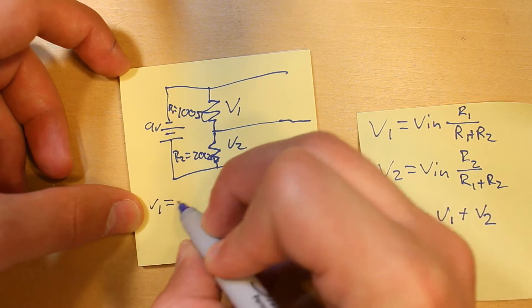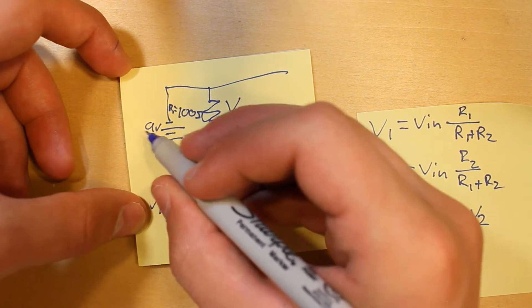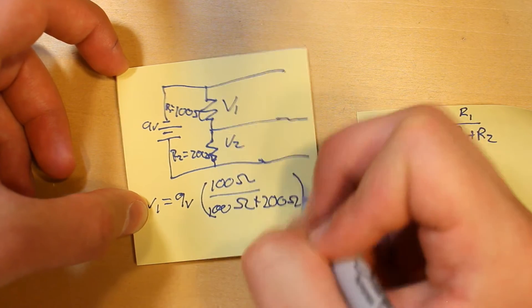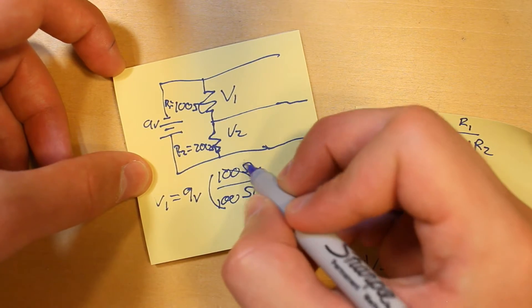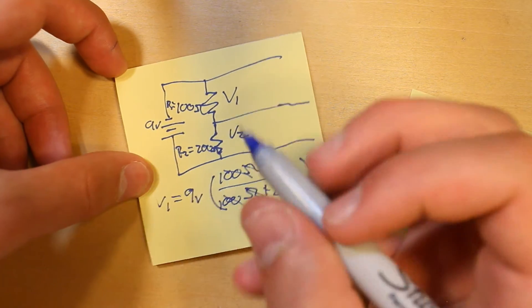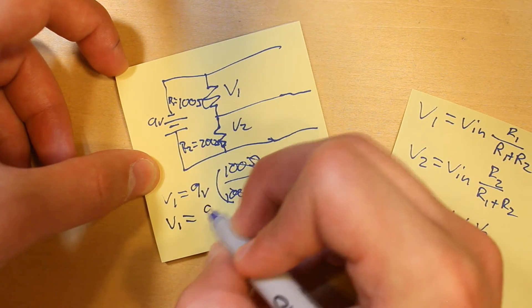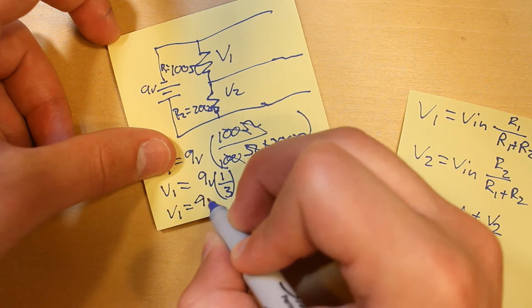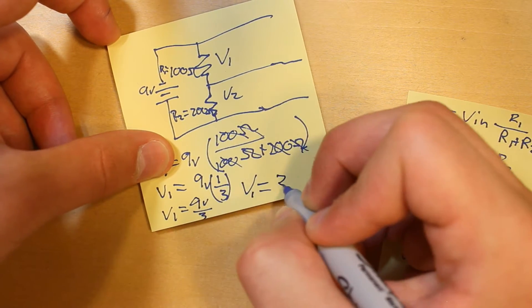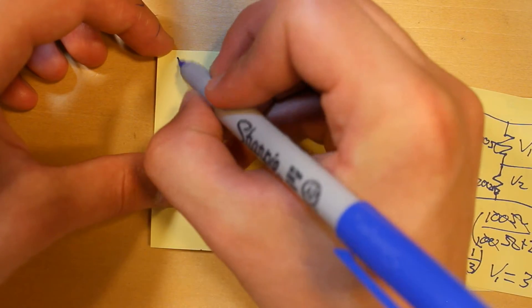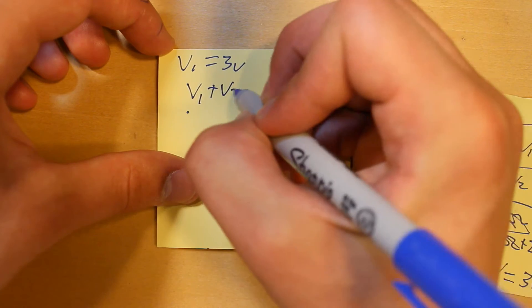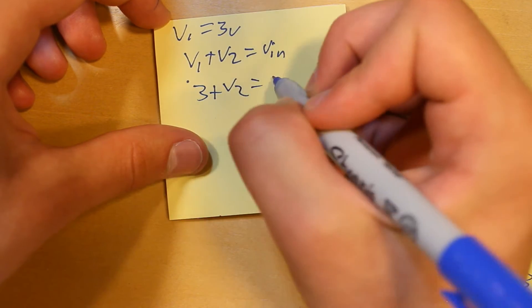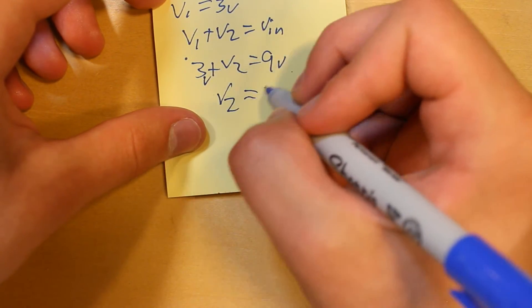Okay, so we do V1 equals 9 volts, which is VN times 100, which is R1 over 100, which is R1 again, plus 200, which is R2. So we can cross out all the two zeros and the units, because units can divide out also, V1 equals 9 volts times 1 over 3. So we have V1 equals 9 volts over 3, so V1 equals 3 volts. With the knowledge that V1 equals 3 volts, we can say V1 plus V2 equals VN, and then 3 plus V2 equals 9 volts, so V2 equals 6 volts.